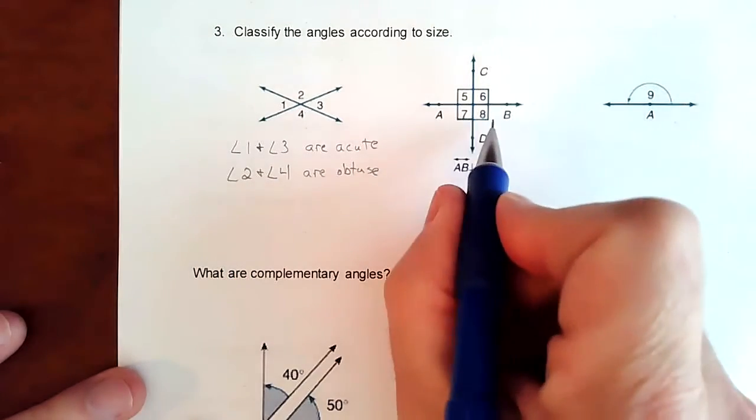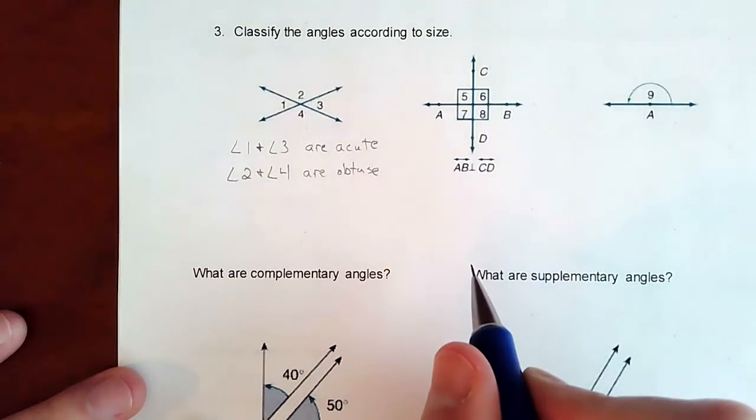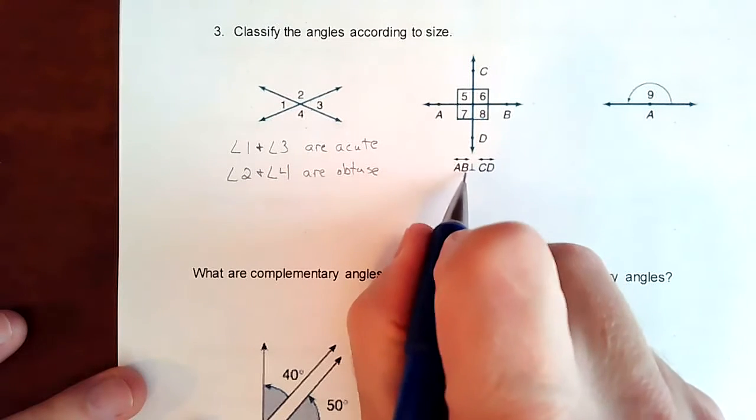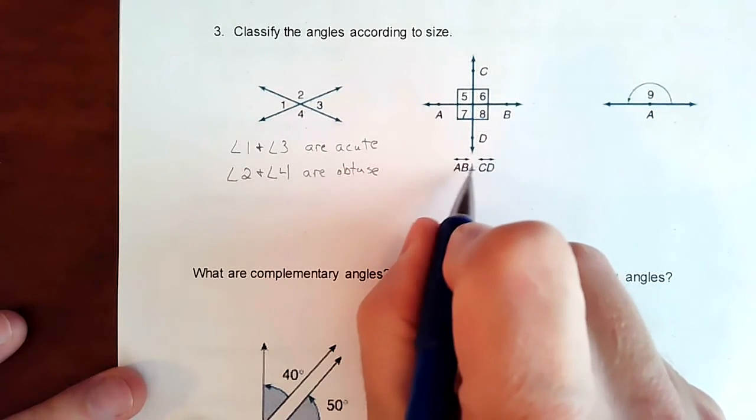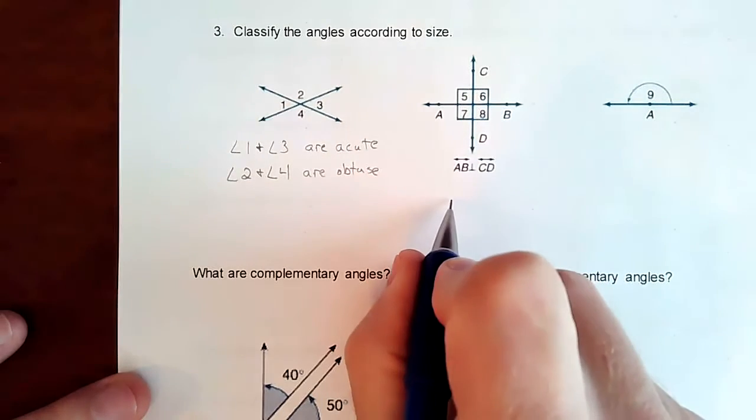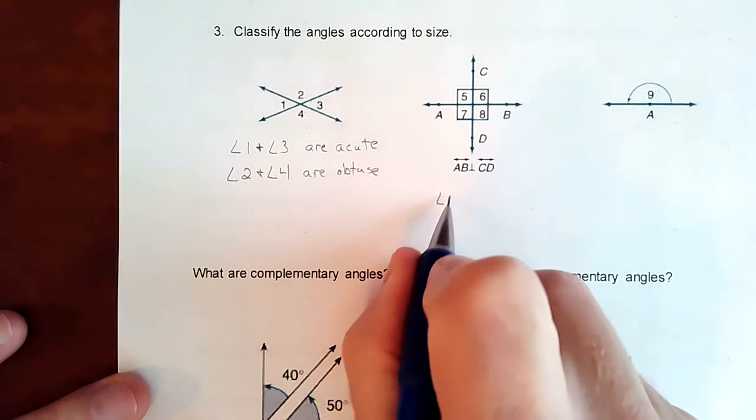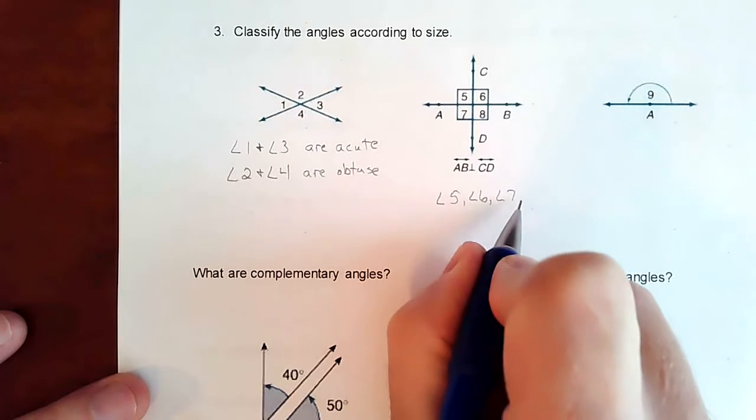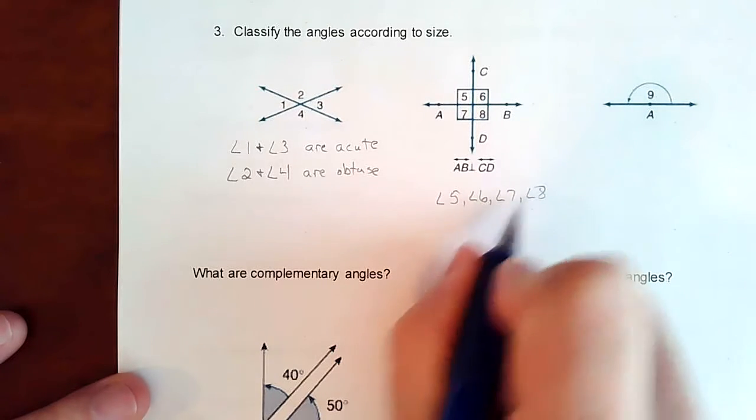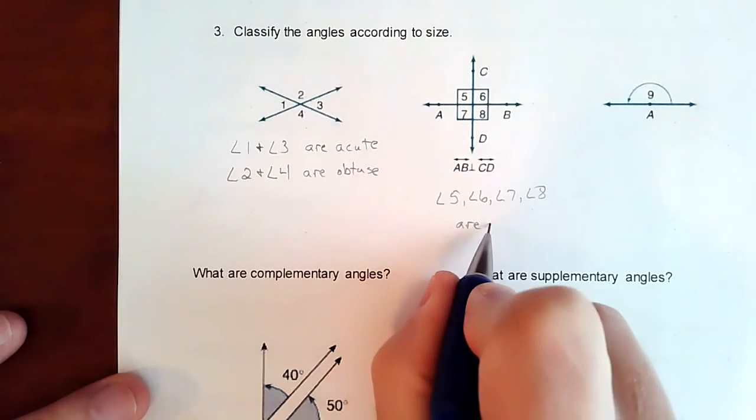Alright. And in this picture, because of the boxes, that means that all of those are 90 degrees. Another thing that tells you that there should be 90 degrees is this symbol right here. That symbol represents perpendicular. So you got angles five, angle six, angle seven, and angle eight are right angles.